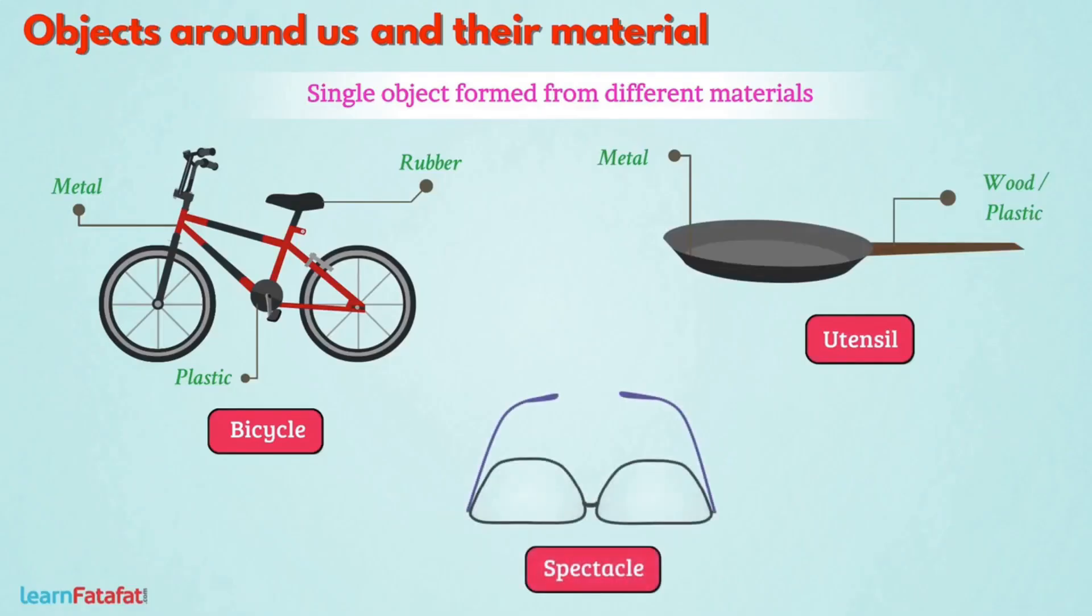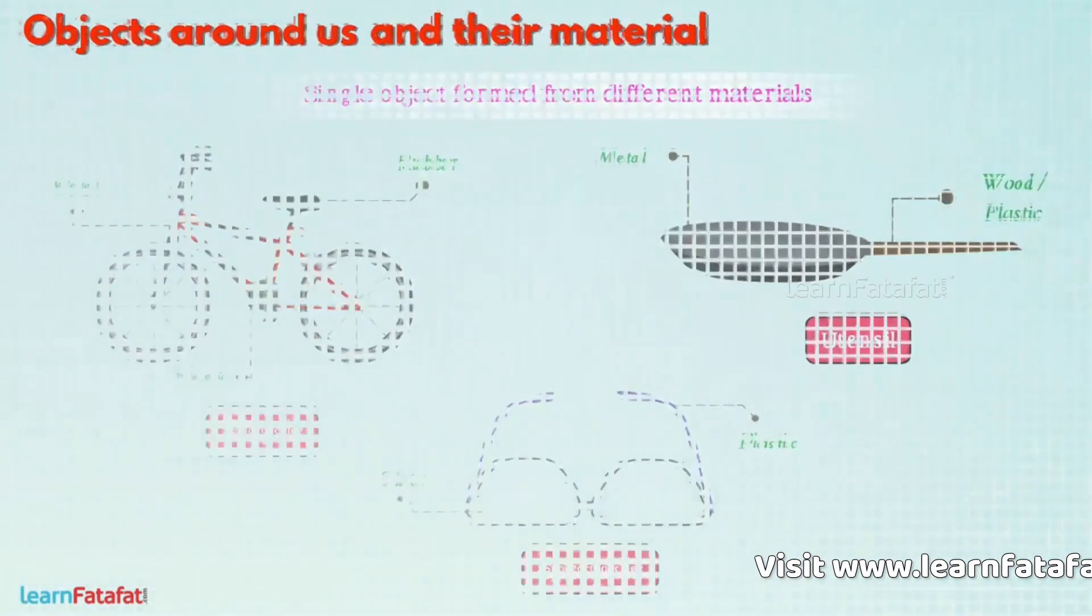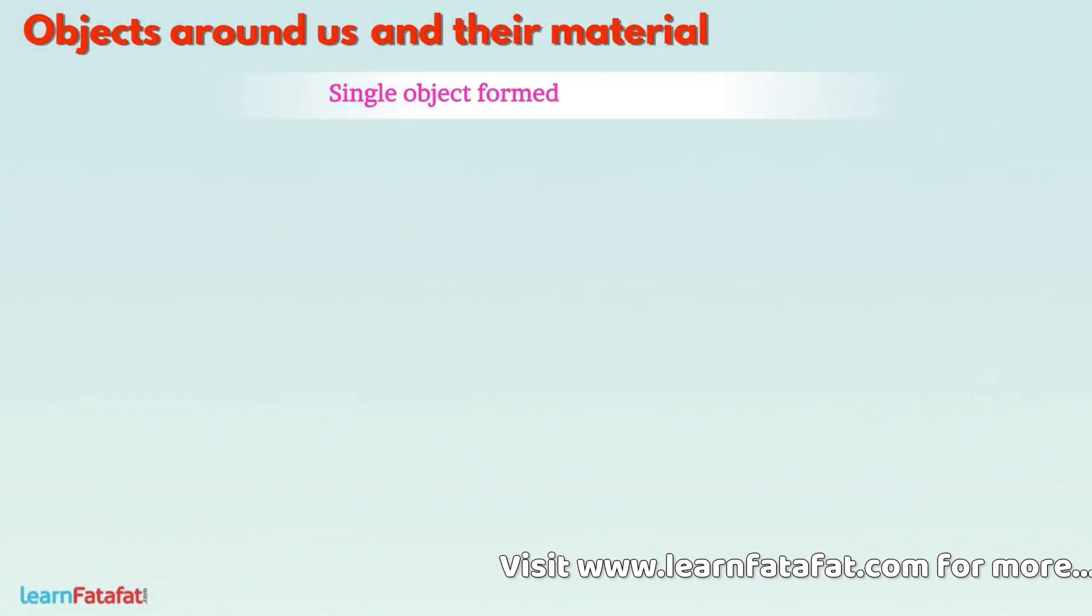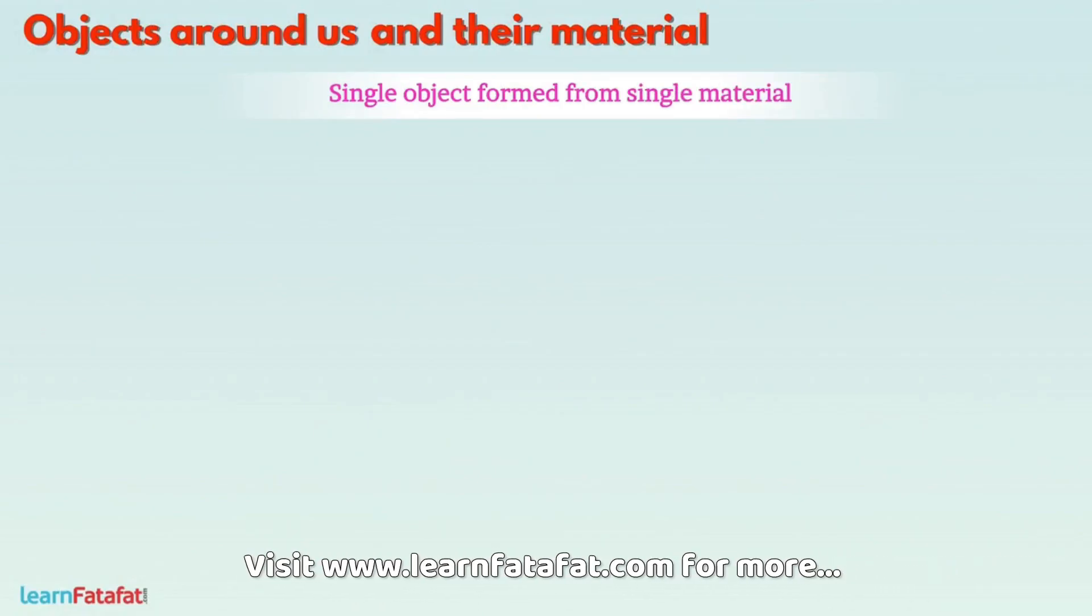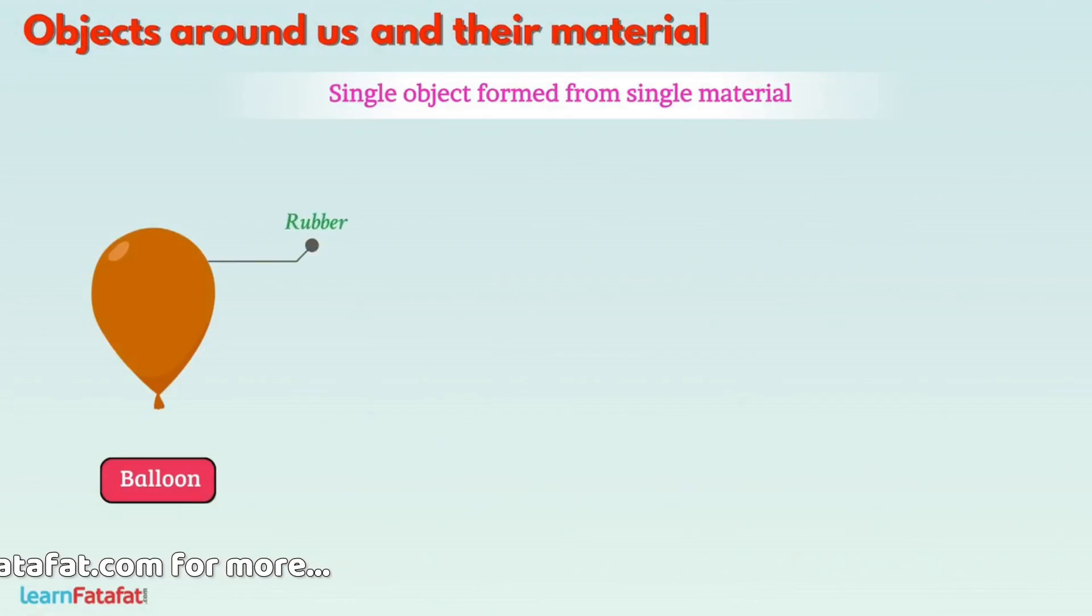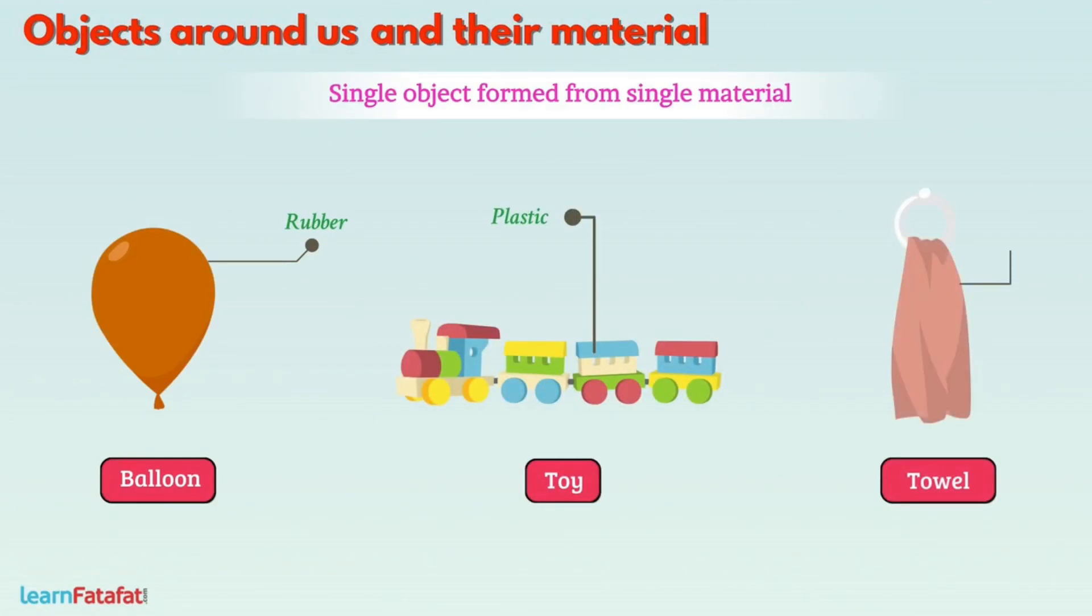A spectacle is made of plastic and glass. However, a single object can also be formed from single material. For example, a balloon is made of rubber, a toy is made of plastic, and a towel is made of cotton.